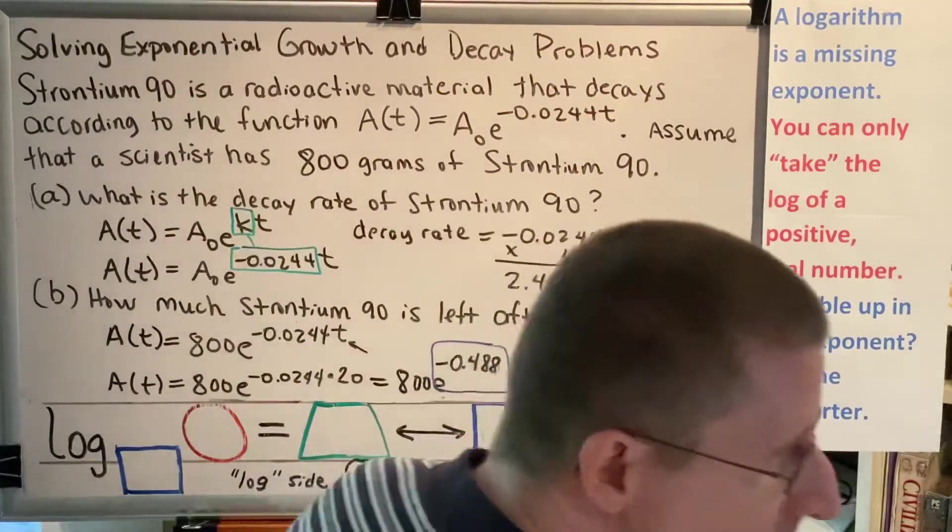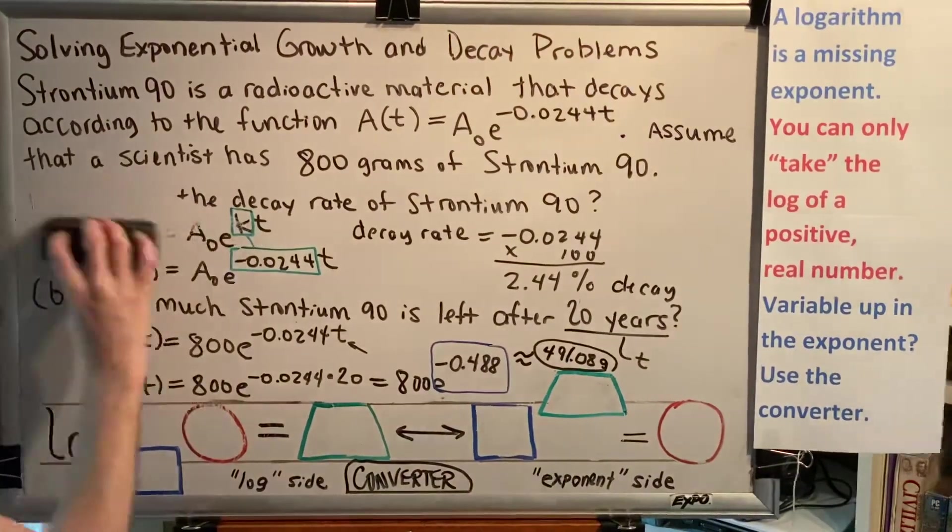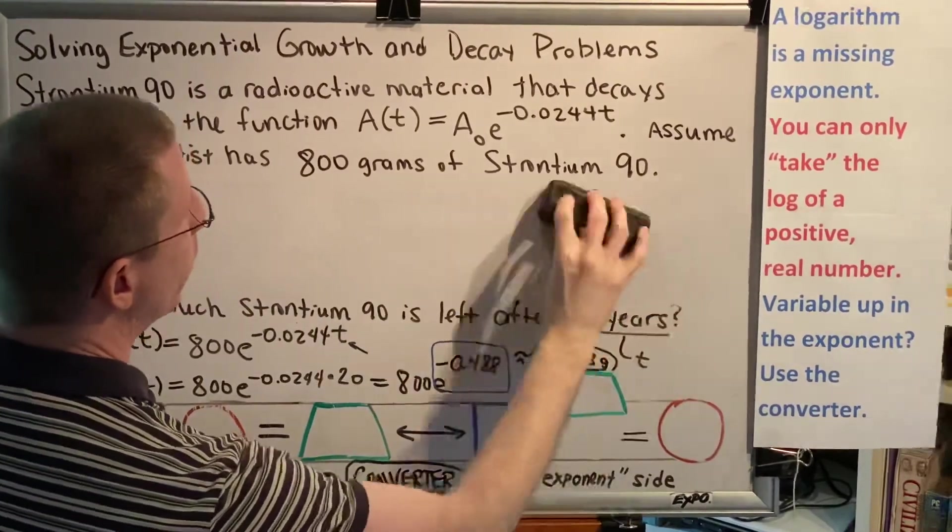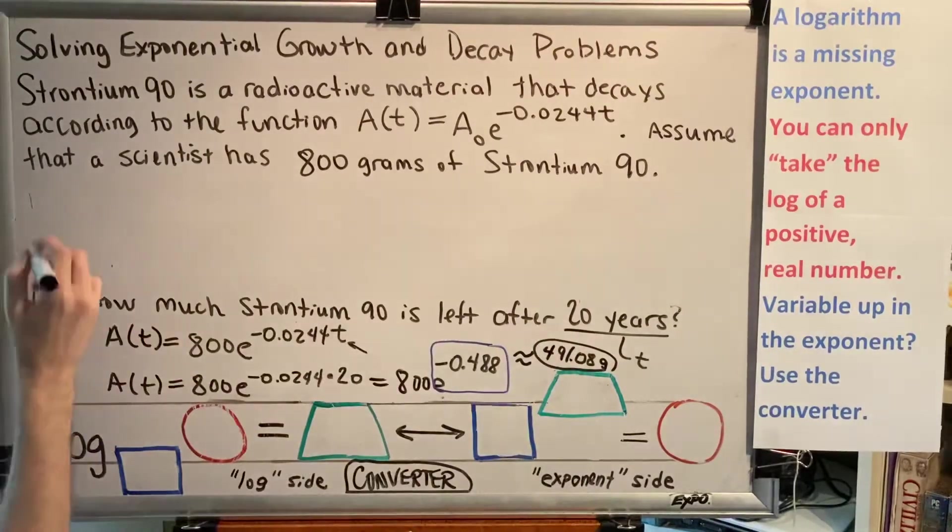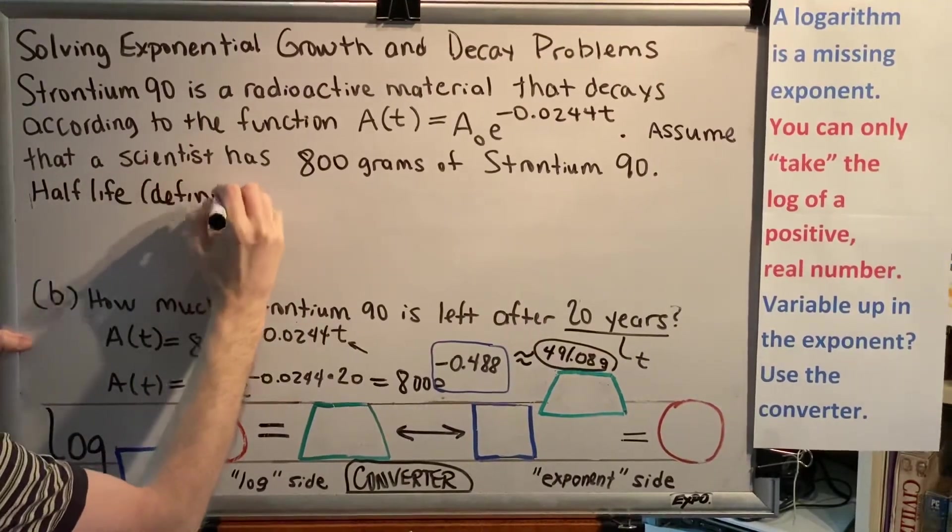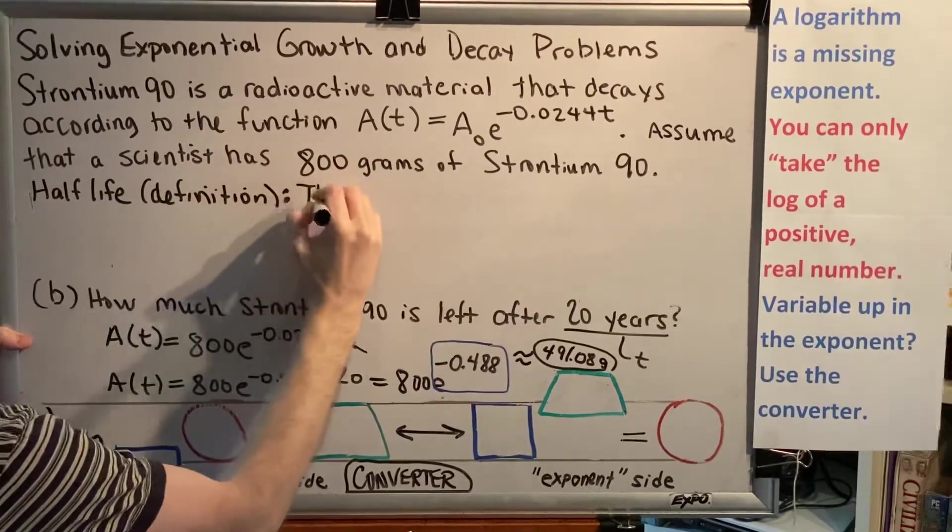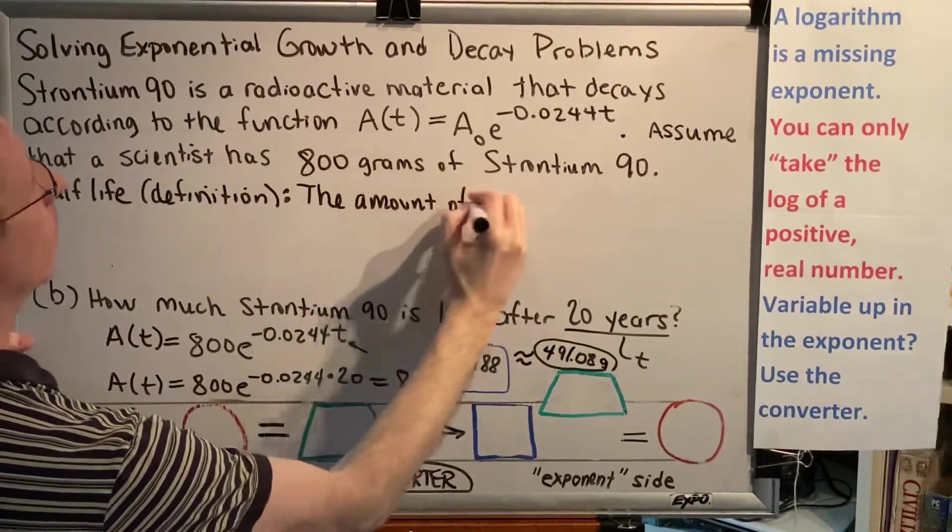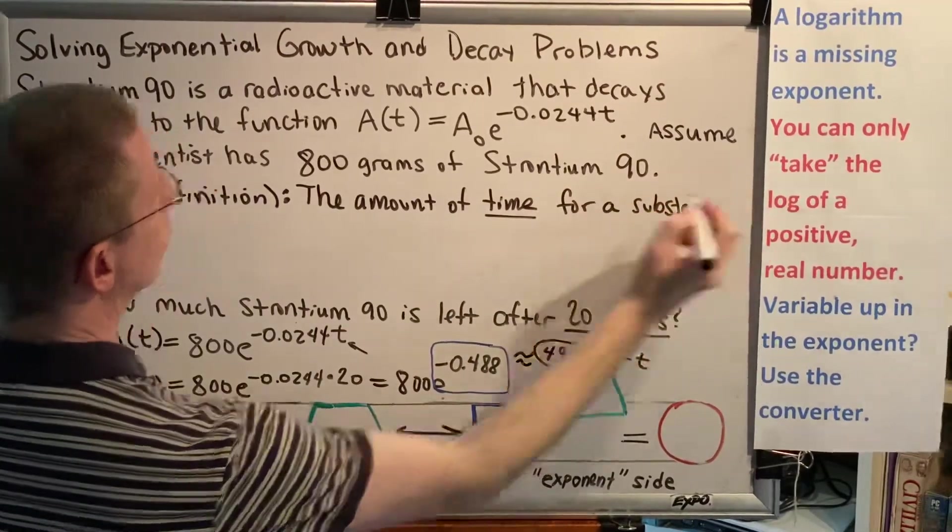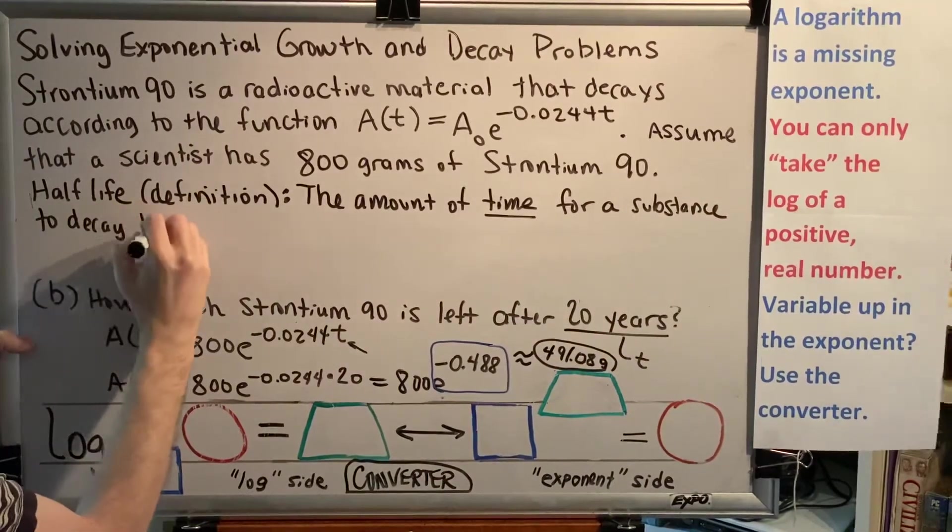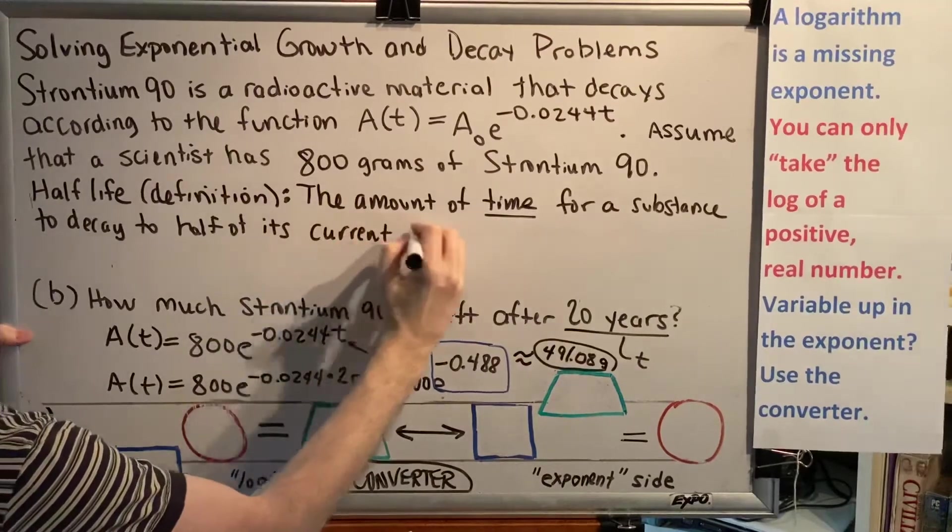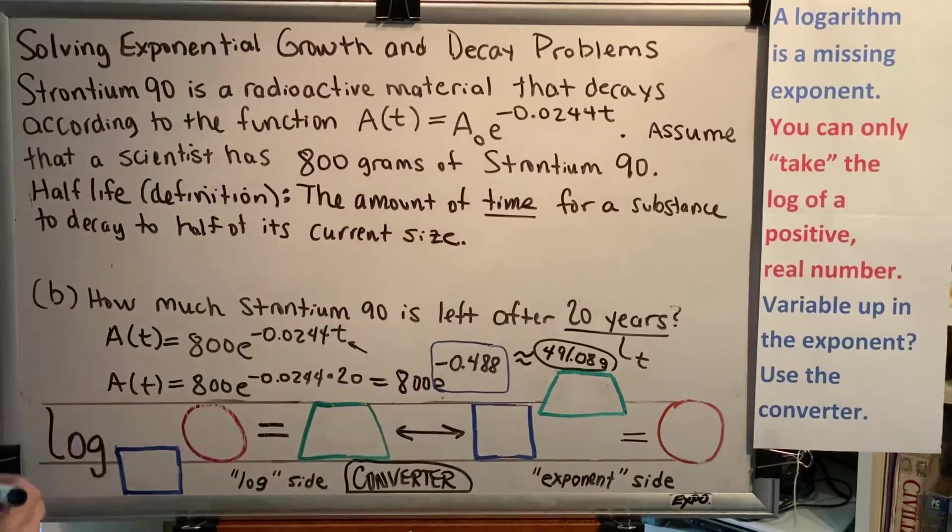Okay, that brings up Part C, which says: What is the half-life of Strontium-90? Well, it turns out half-life is not just a popular video game series. It is also a term from chemistry. And so if we want to be able to find the half-life of Strontium-90, I need to give you a definition. So here's a little bit of chemistry for you. Half-life definition: the amount of time for a substance to decay to half of its current size.